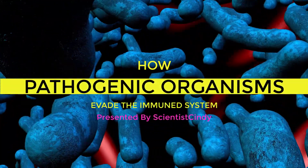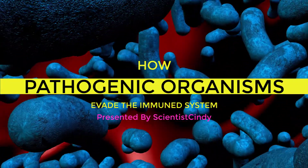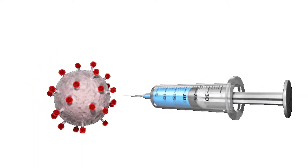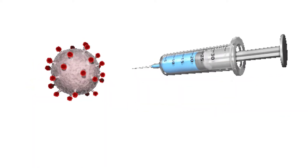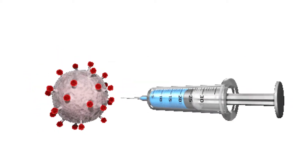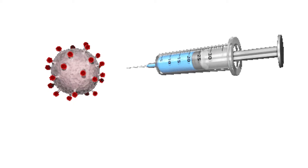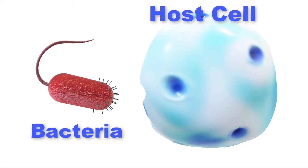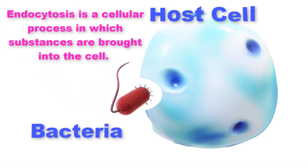Pathogens are microorganisms that cause disease. These can be bacteria, viruses, or parasites. While the human body has many strategies to fight infection by pathogenic organisms, many of these disease-causing microbes have developed sophisticated strategies to evade the immune system. A bacterial pathogen capable of hiding in a host cell initially enters by endocytosis.